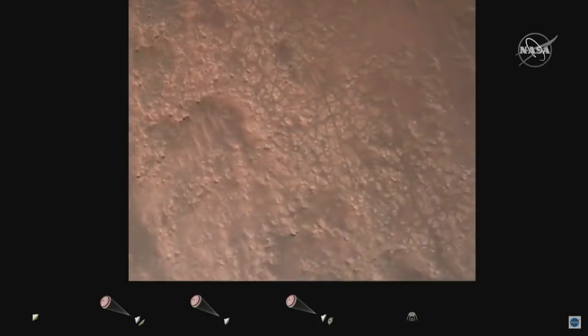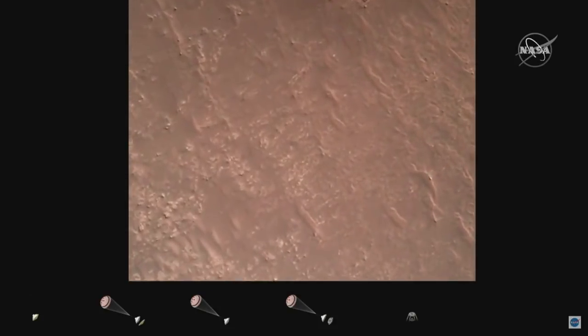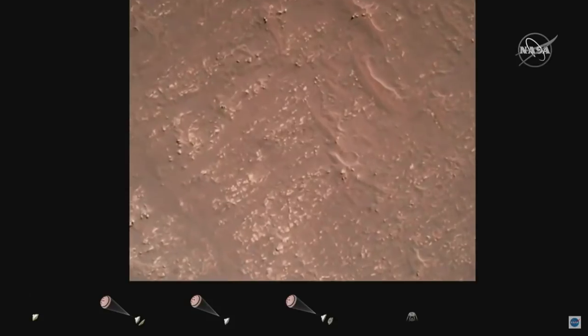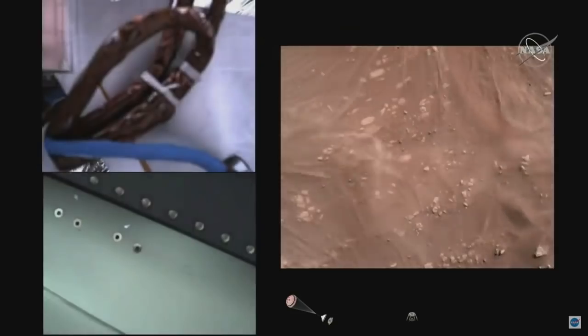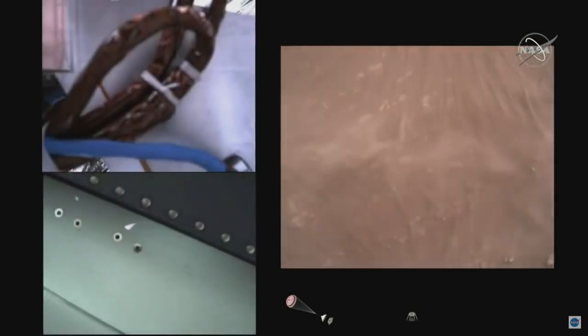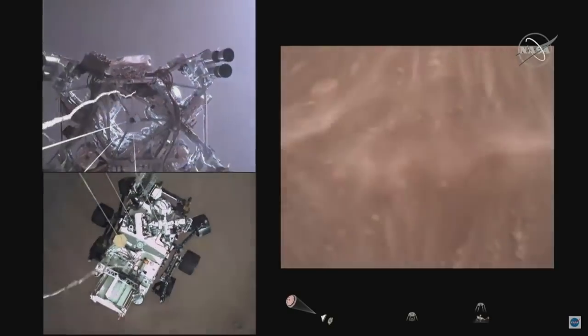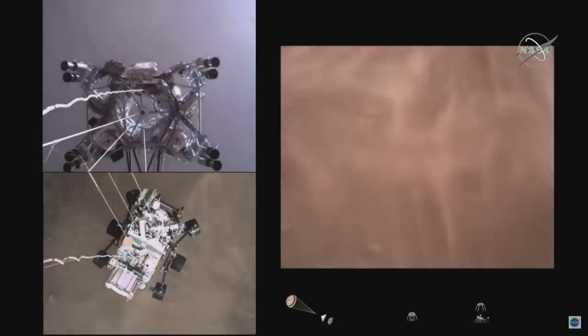Current speed is about 30 meters per second at an altitude of about 300 meters off the surface of Mars. We have started our constant velocity descent, which means we are conducting the sky crane, about to conduct the sky crane maneuver. The sky crane maneuver has started. About 20 meters off the surface.